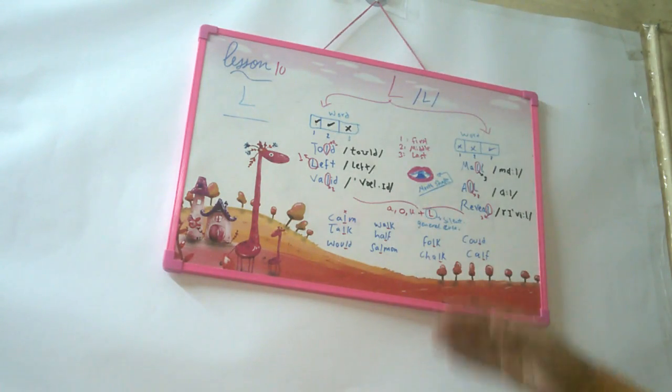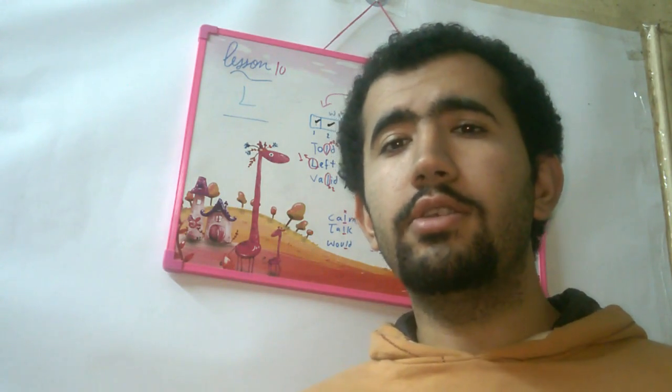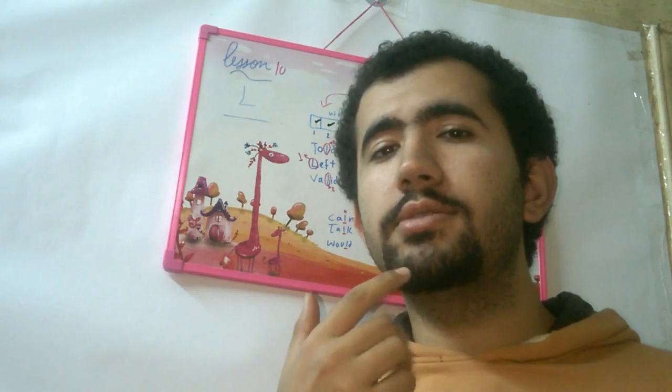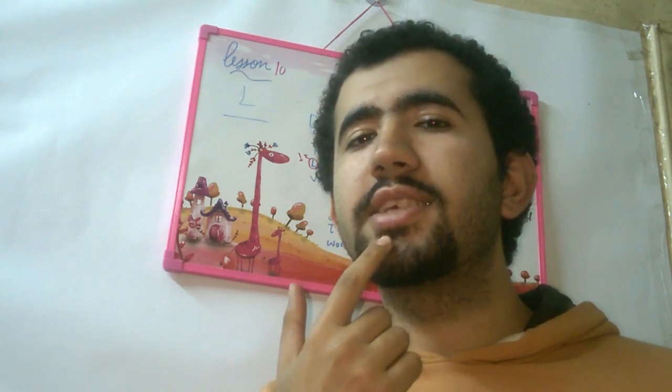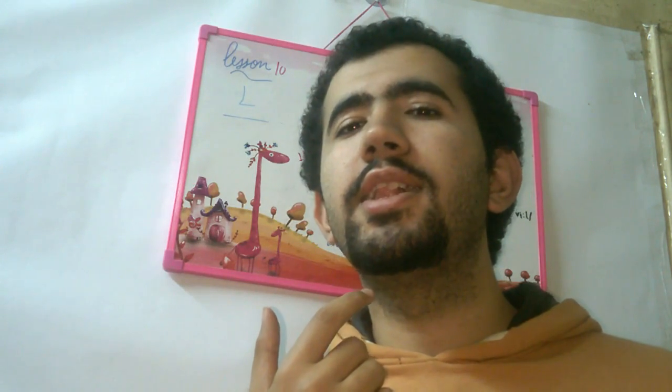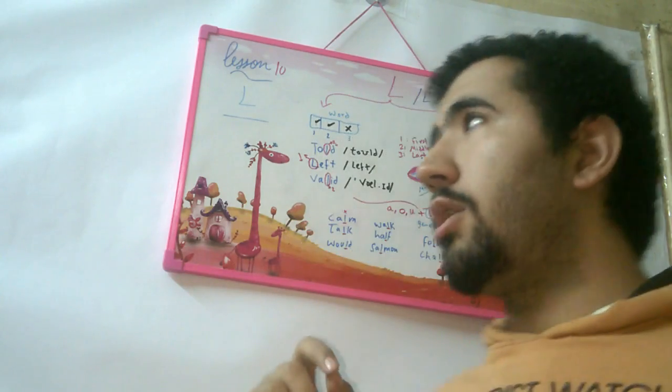Today we're going to talk about the L sound. To make the L sound, your tongue has to be behind your teeth. So this is your teeth and your tongue is behind your teeth, like this. When you say L.